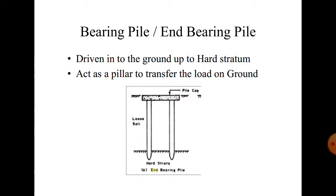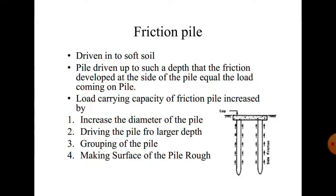Next is friction pile. When we insert a pile in the ground, friction is generated on the surface of the pile. Friction pile is generally driven in soft soil to such a depth that the friction developed at the periphery of the pile equals the load coming on the pile. The load carrying capacity of a friction pile can be increased by four methods: first, increase the diameter of the pile; second, drive the pile to a larger depth; third, grouping of piles; fourth, making the surface of the pile rough.